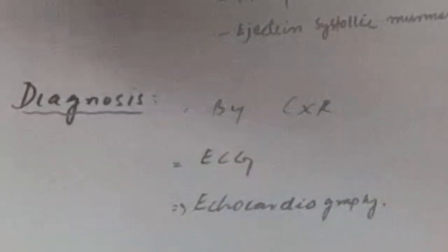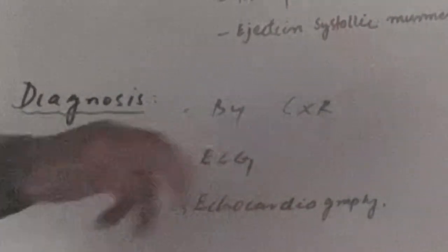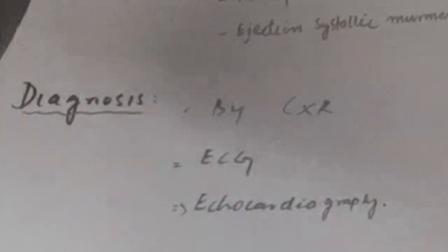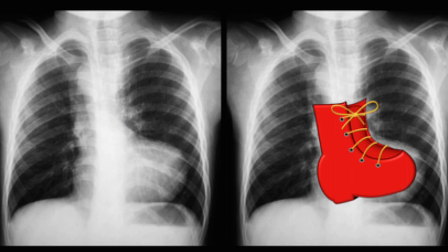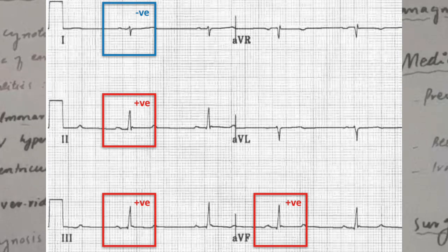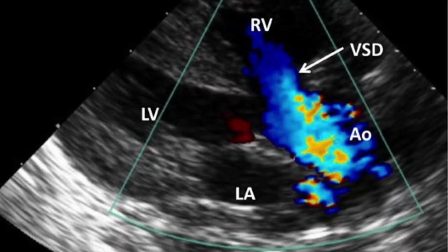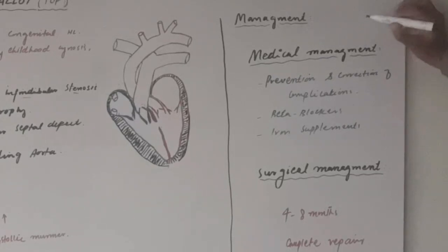To diagnose Tetralogy of Fallot, three investigations are mostly done. The first is the chest X-ray — when we do a chest X-ray, the heart of the patient will appear like a boot shape. On the ECG, you will see right axis deviation. On echocardiography, you will see right ventricular hypertrophy, infundibular stenosis, ventricular septal defect, and overriding of the aorta — all four abnormalities can be seen on echocardiography.